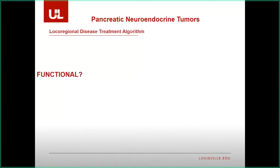For our patient, he has a 2.2 centimeter mass. I did get a dotatate PET on him — we'll talk about that two centimeter cutoff. We did an EUS biopsy: well-differentiated grade one neuroendocrine tumor. The treatment for this gentleman actually hinges on his metastatic prostate cancer. He's responding well to androgen deprivation therapy — his PSA is almost undetectable. We are probably going to operate on him because he's doing well from the prostate cancer standpoint, and this pancreatic neuroendocrine tumor does have a risk of developing metastases.